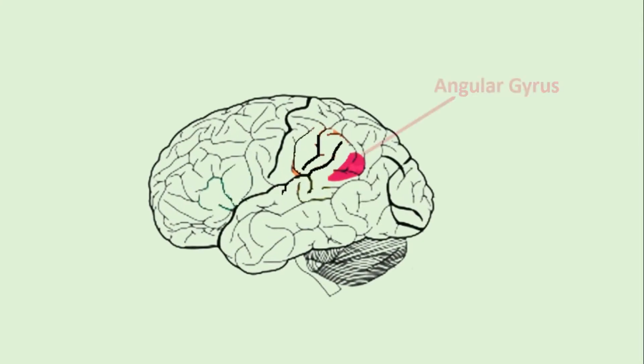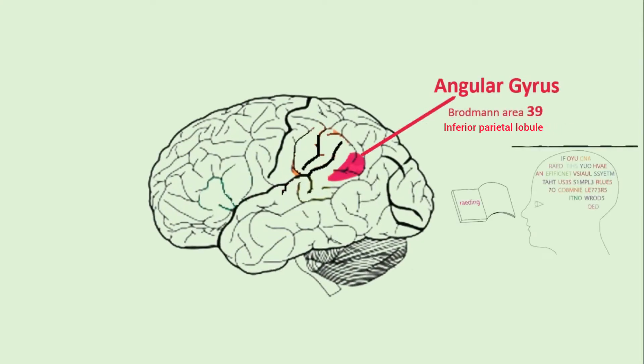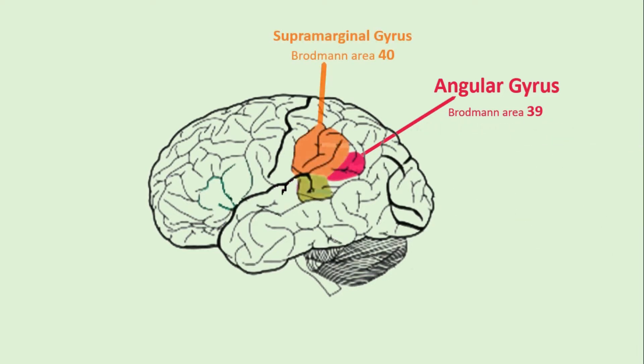The angular gyrus, located in the parietal lobe, is involved in word processing. It works in coordination with the supramarginal gyrus and Wernicke's area to comprehend language.